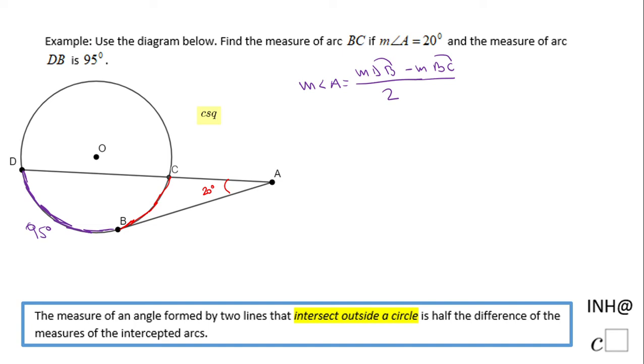So now in this equation we're going to plug in the information we have. We know that angle A is 20 degrees and we know that arc DB is 95 degrees and we need to find the measure of arc BC. I'm going to call it X, and over 2.